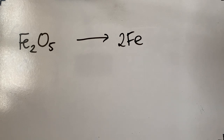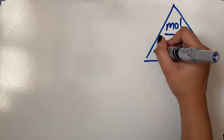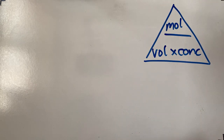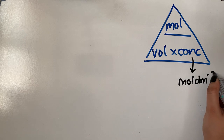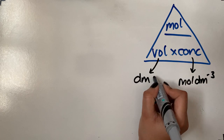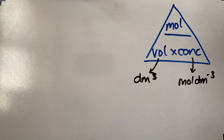I'm now going to go to exercise 14, where we are now working with solutions. When it comes to solutions, there's another equation involved. The equation is moles over volume times concentration. Just to cover the units: concentration units are moles per decimetre cubed, and because this is in decimetres cubed, volume must also be in decimetres cubed. That part is very, very important — you must convert everything to decimetres cubed. Let's look at question number one to see why it's important.